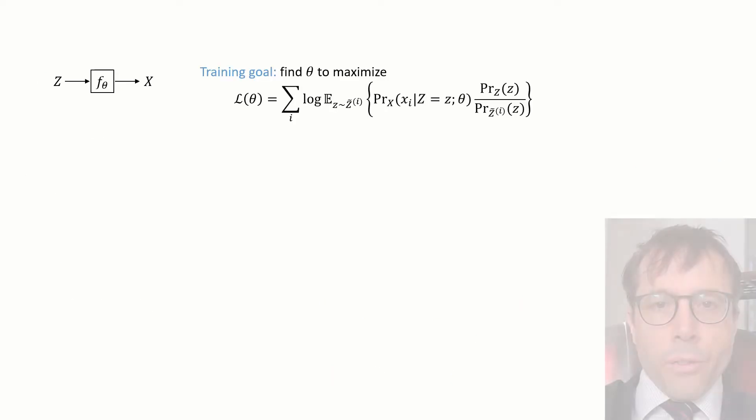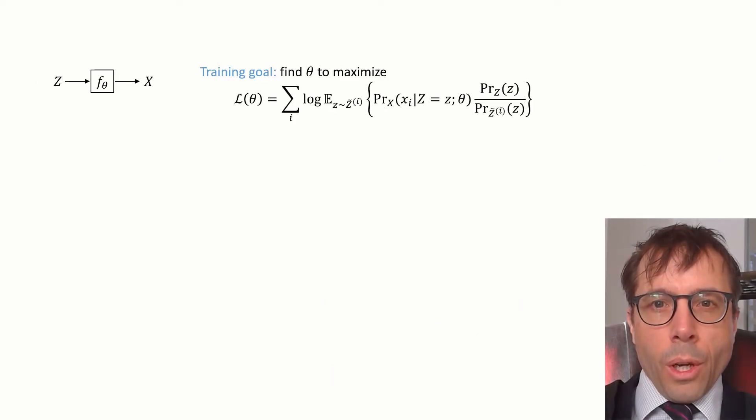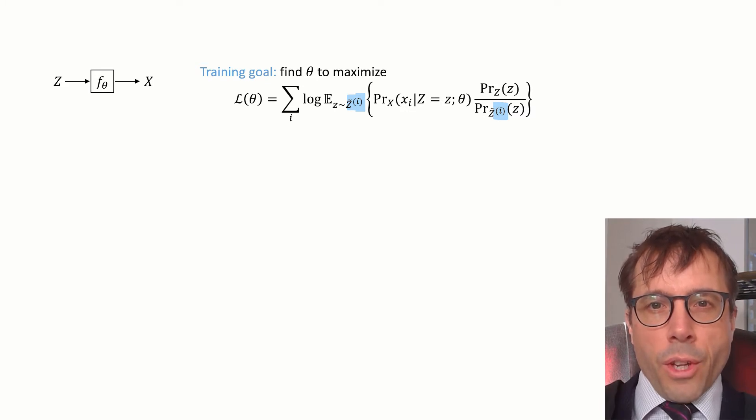OK, so this is what we want to optimize. We want to find θ to maximize this log likelihood. Note that I wrote here Z̃ superscript i, just to emphasize that the sampling distribution should be chosen depending on the data point Xᵢ.